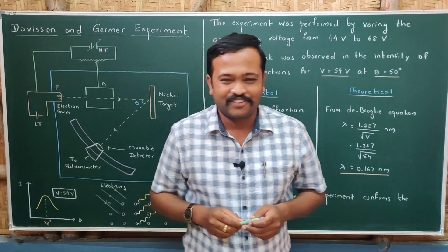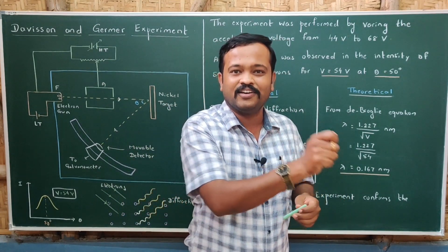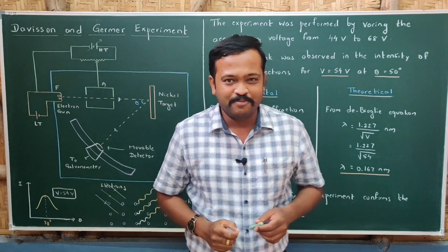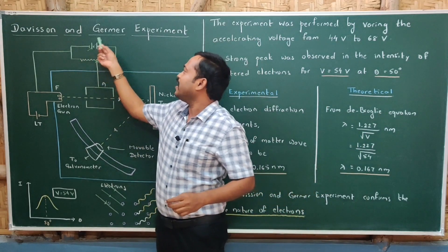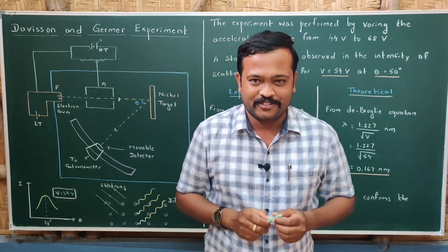Welcome you all to part 7 of the chapter Dual Nature of Radiation and Matter. This session will be on how Davisson and Germer confirmed the wave nature of electrons.